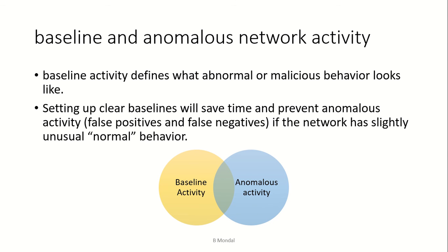There are two kinds of network activity: baseline and anomalous. Baseline activities define what normal or known malicious behavior looks like — a defined set of activities that are considered abnormal or malicious. Anomalous activities are those actually occurring. Setting up a clear baseline saves time in preventing anomalous activity, which essentially represents attacks.